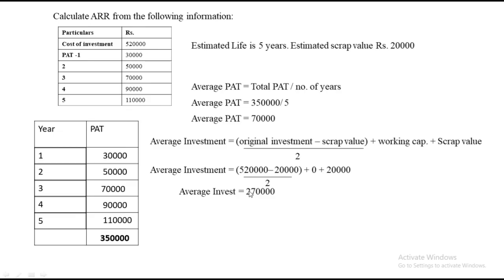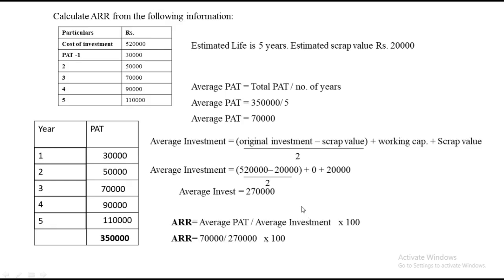Now we directly apply the final formula: ARR equals average PAT divided by average investment, multiplied by 100. That is 70,000 divided by 2,70,000, multiplied by 100. Our final answer is 25.926%. This is how you solve a sum based on ARR — a very simple topic. Just take the average profit after tax, divide by average investment, multiply by 100, and that is your ARR.